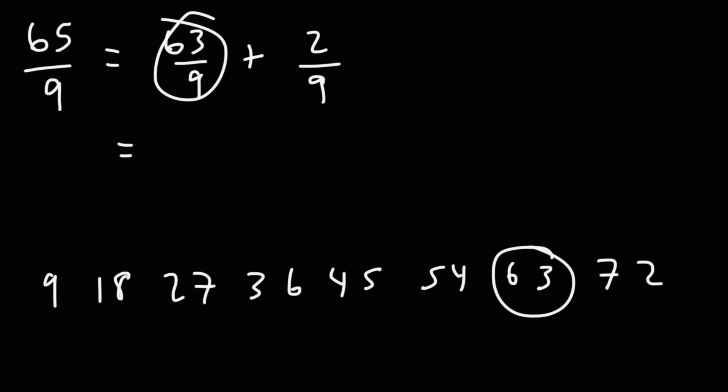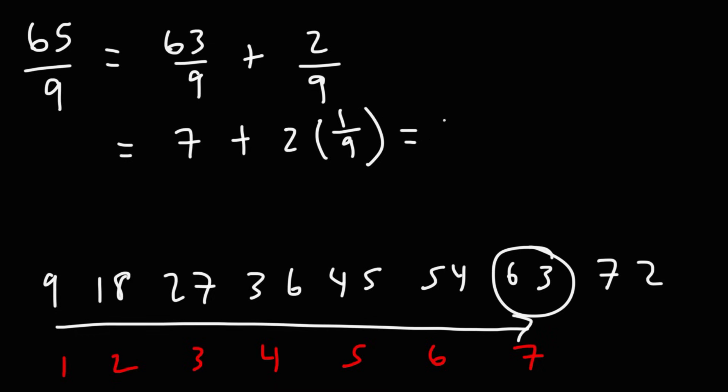Now, 63 divided by 9 is 7 because it took 7 nines to get to 63. And then we have 2 over 9, which is 2 times 1 over 9. 1 over 9 we know is 0.1 repeating. So 2 times 0.1 repeating is 0.2 repeating. So this becomes 7.2 repeating.